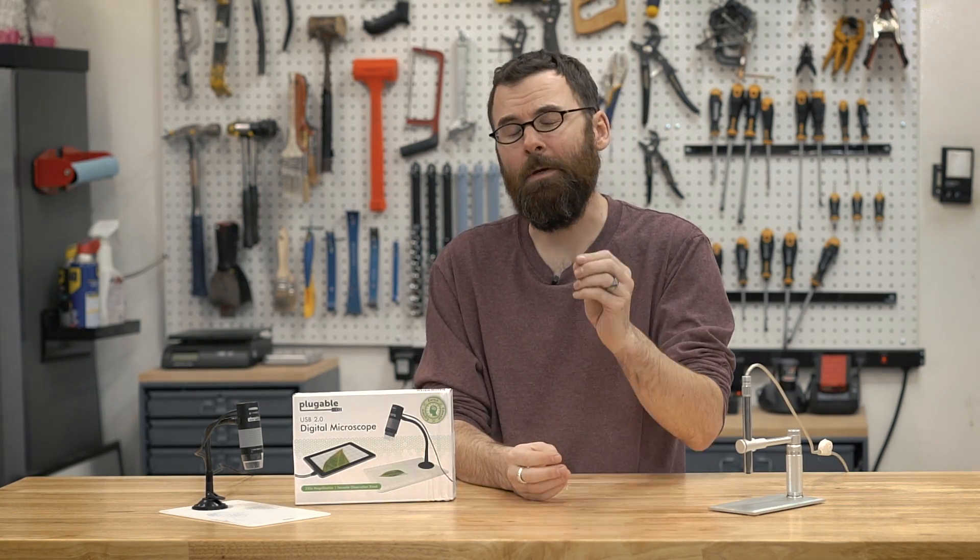These are the objects that we will be looking at through the microscopes. I've got a carbide end mill that actually has some chips in the flute, so I want to take a closer look at those and see what they look like. We've got a 3D printed Benchy that has some issues with it, so I want to zoom in and see what the layers look like on this.